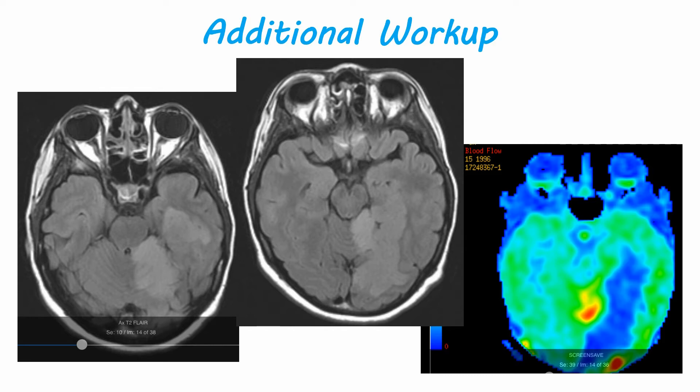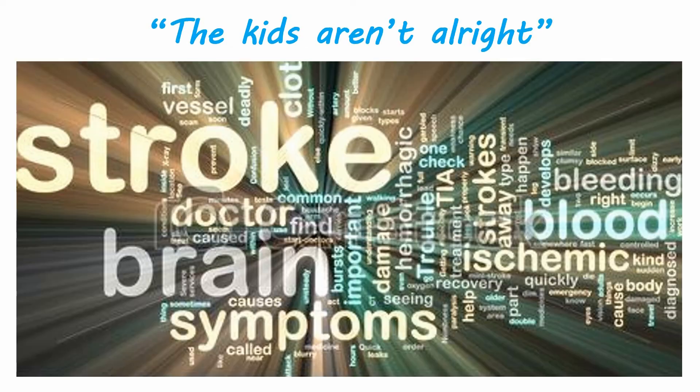We're going to be talking about pediatric stroke. Half of the strokes in children are related to ischemia, whereas 80 to 85 percent occur in adults. Children also have a larger and more diverse set of risk factors associated with stroke. Ten to 25 percent can die, 25 percent will experience a recurrence, and 66 percent of children will have a persistent neurologic deficit, including seizure, learning disability, or other developmental problem.